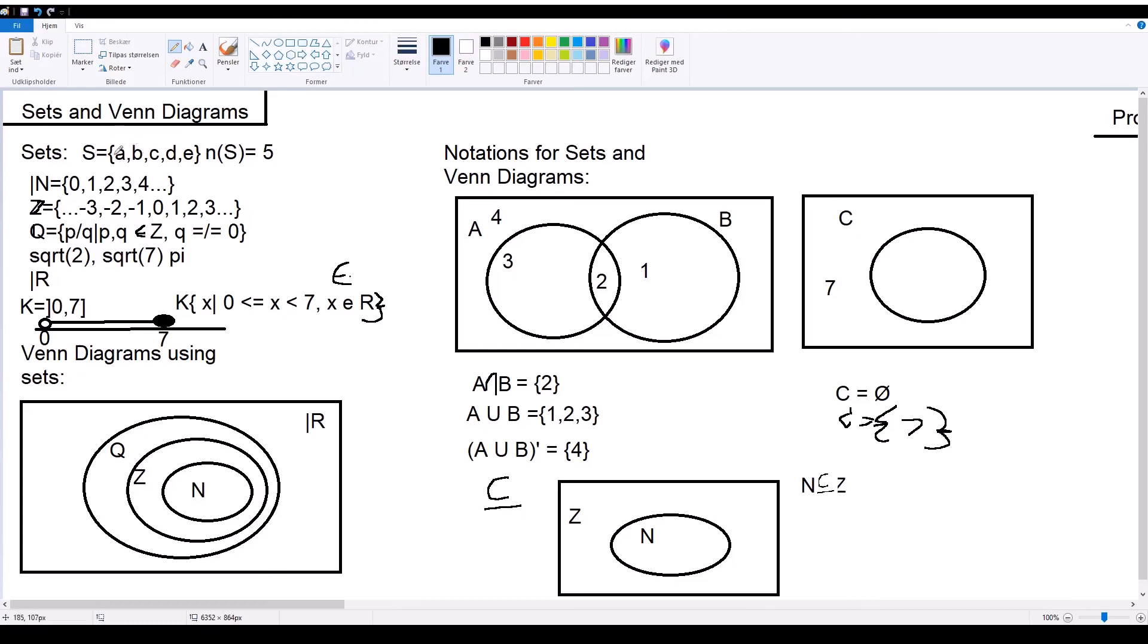Another thing to mention is what different types of sets are called. This set here, set S, would be called a discrete set because it only contains a specific amount of elements, which would be a finite amount of elements. A continuous set would be something like K because K only shows that the set contains everything between 0 and 7 and nothing else. So that means that everything inside here is part of set K but it doesn't show specifically which numbers there are, meaning that there's an infinite amount of numbers and decimal numbers and all that sorts of stuff within this set because it's an interval.